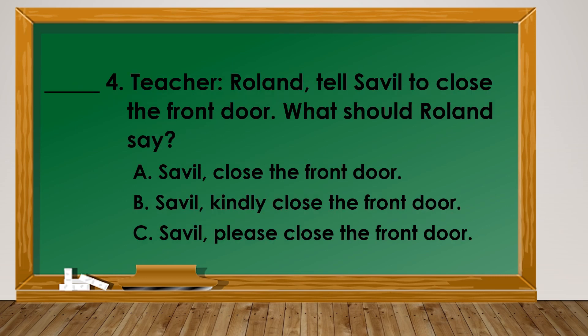Number 4: Teacher Roland tells Saville to close the front door. What should Roland say? A. Saville, close the front door. B. Saville, kindly close the front door. C. Saville, please close the front door. The correct answer in number 4 is letter A.